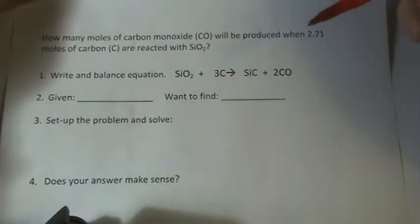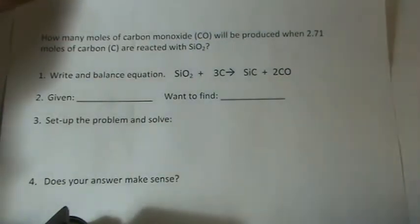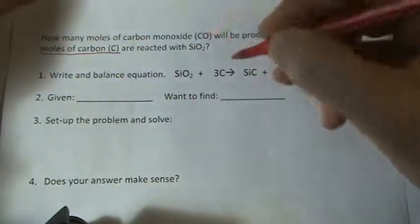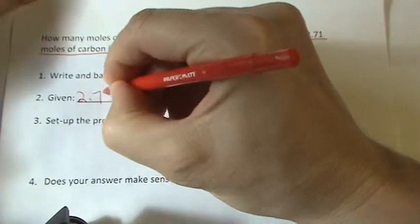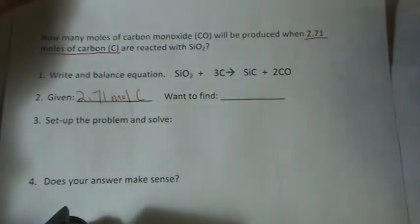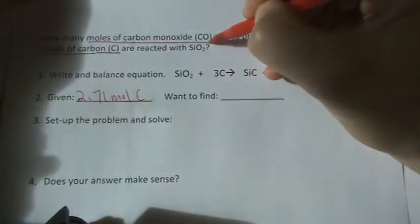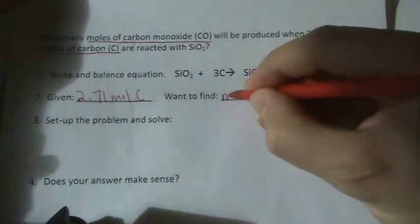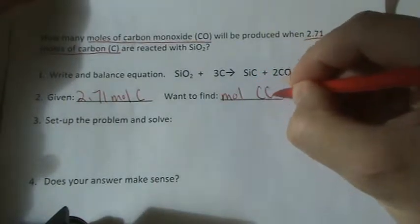Let's look at what we're given and then what we want to find as a first step. Looks like we're given 2.71 moles of carbon, and we want to find how many moles of carbon monoxide.